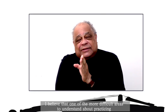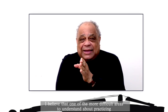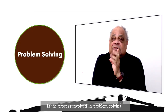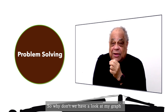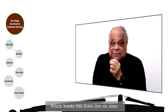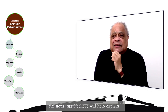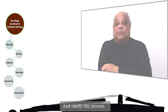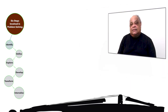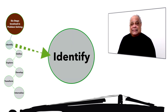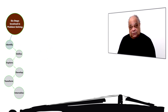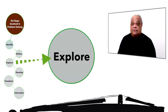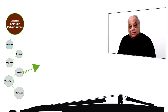I believe that one of the more difficult areas to understand about practicing is the process involved in problem-solving. Let's have a look at my graph which breaks this down into six steps that I believe will help explain and clarify this process. The six steps are: one, identify; two, define; three, explore; four, develop; five, transform; six, internalize.